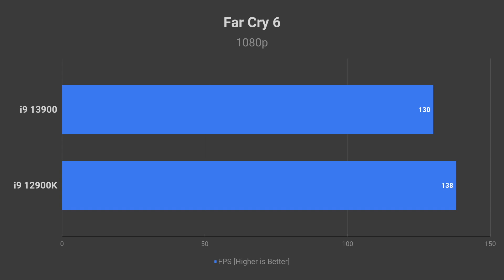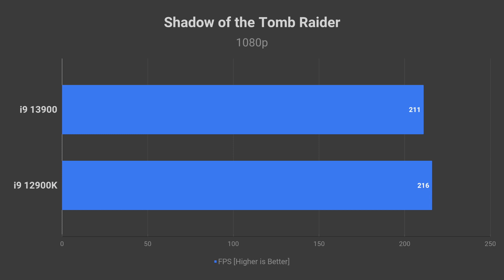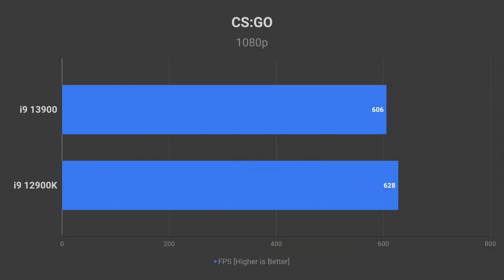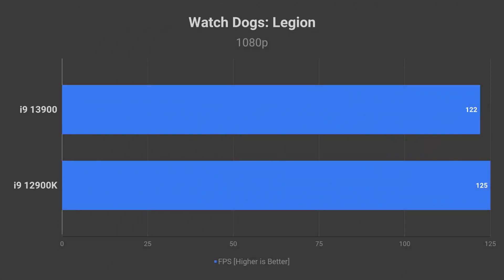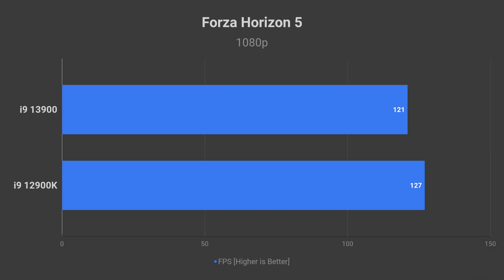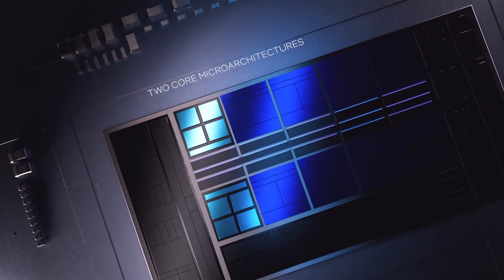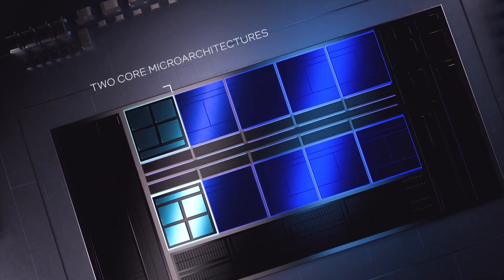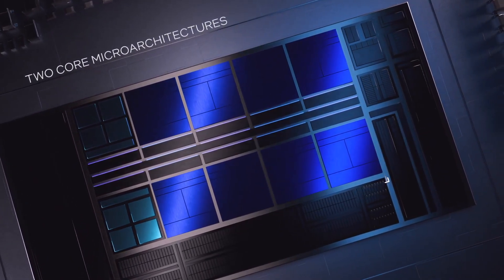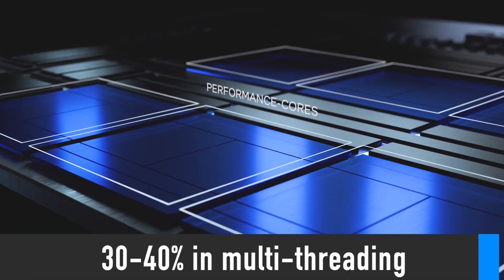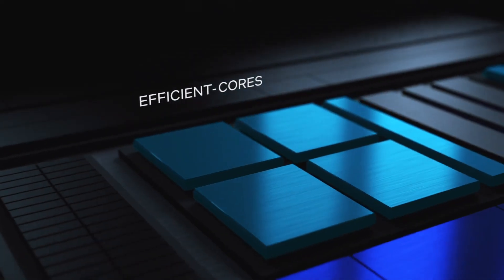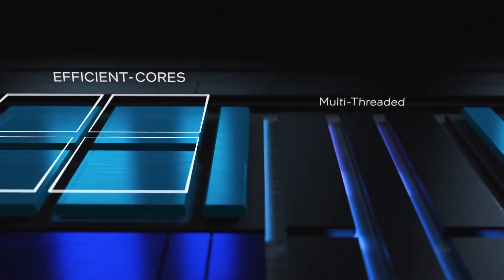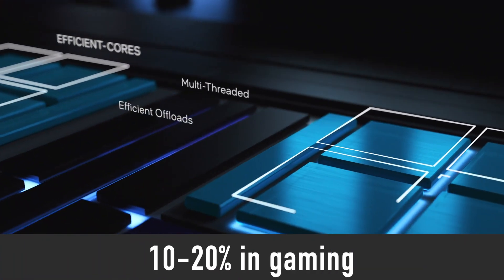However, in gaming we see a different picture. The 13900 loses by 8 FPS in Far Cry 6, by 5 FPS in Shadow of the Tomb Raider, and by 22 FPS in CS:GO, with this trend extending to other games as well. Bear in mind this is an early engineering sample, so more optimizations on both software and hardware levels will be made before the final product launches. Additionally, 13th gen processors are expected to feature higher core clock frequencies. These benchmarks reaffirm the 30–40% multi-threading improvement figure that was previously leaked, and personally I expect up to 40% improvement in certain productivity apps and up to 10–20% in gaming.